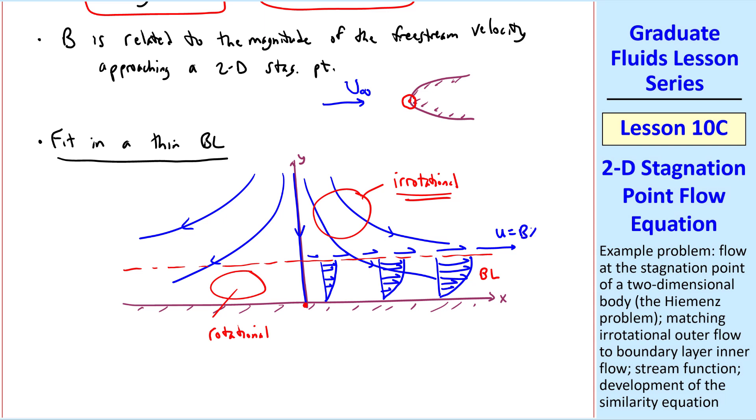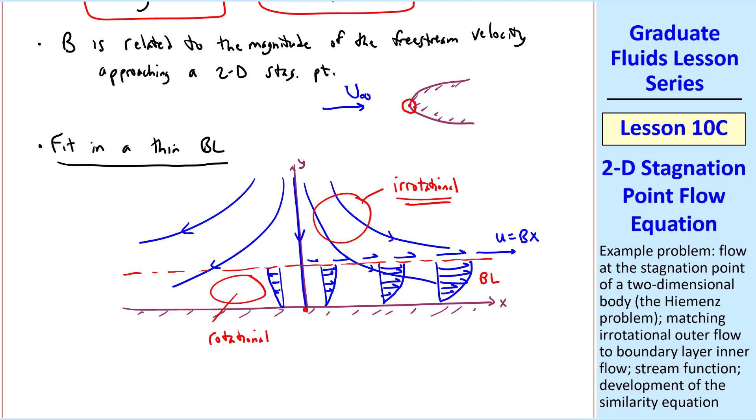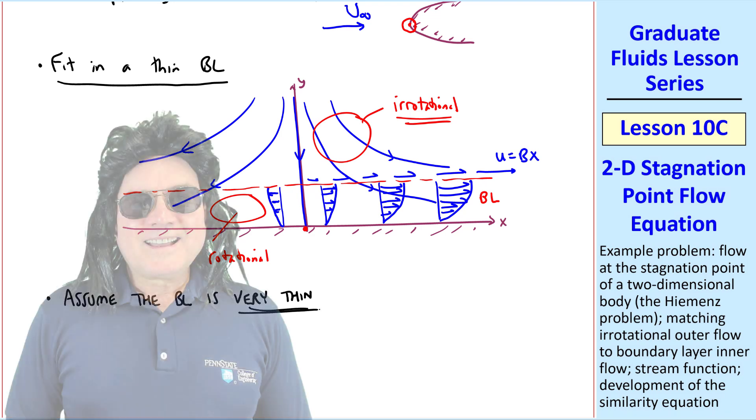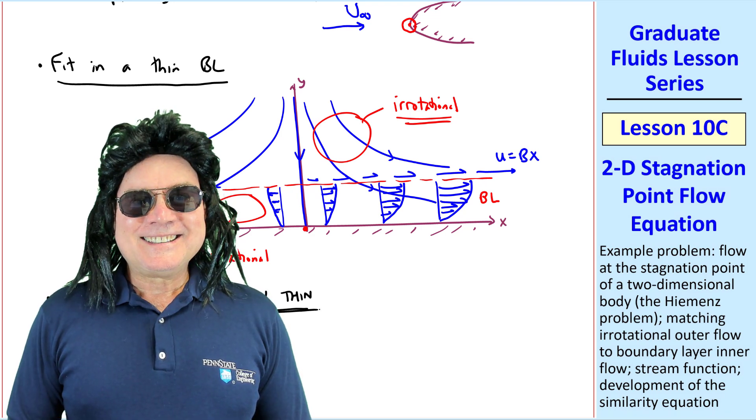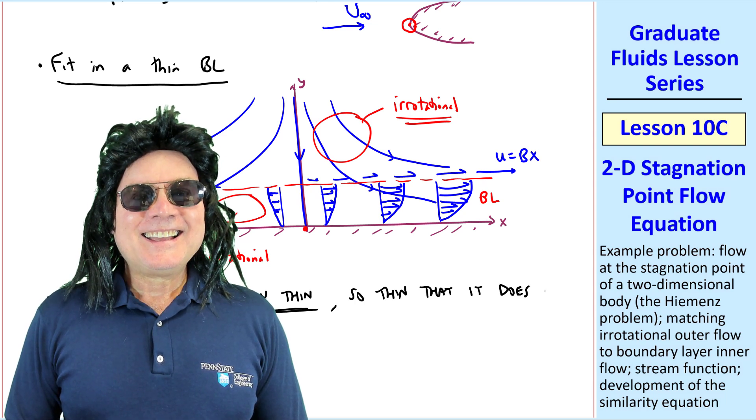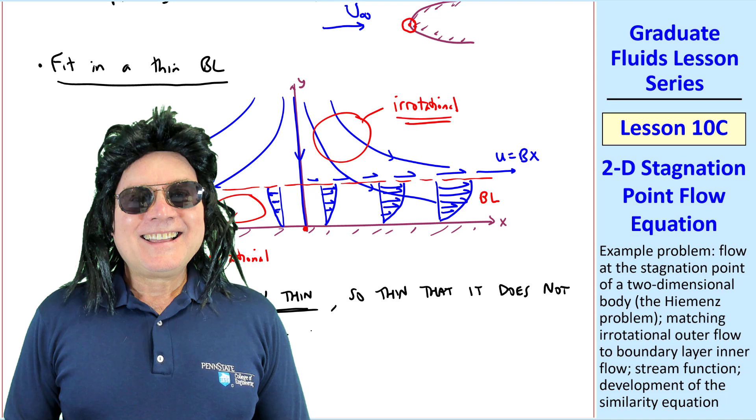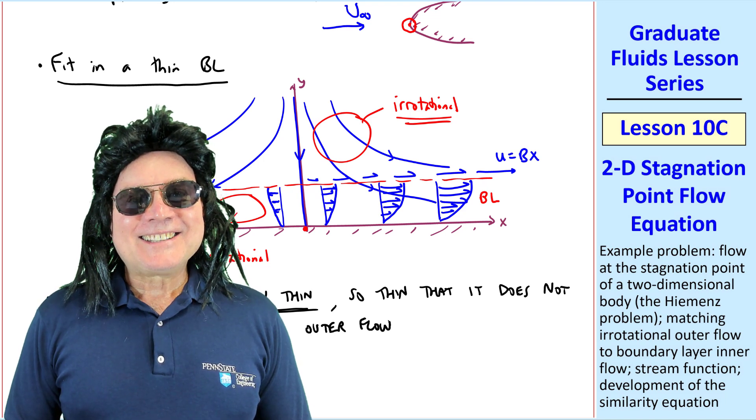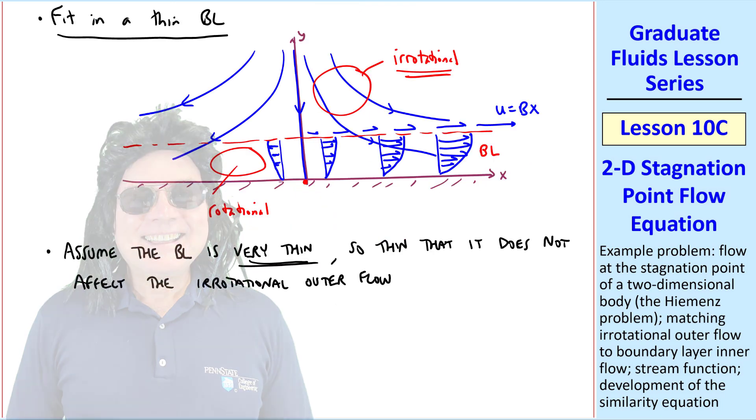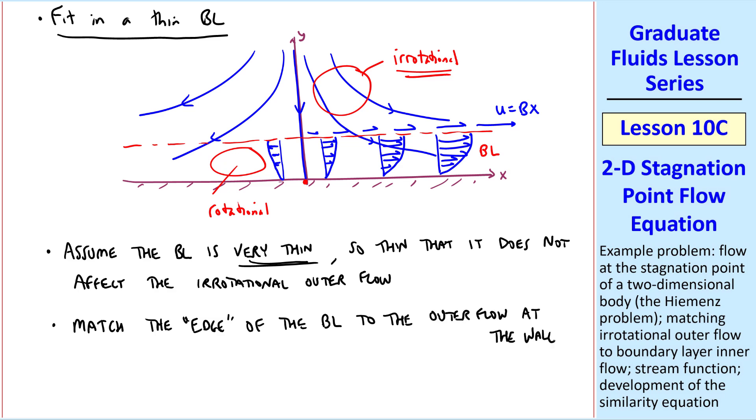Everything is symmetric about the y-axis as well. We'll make an assumption here, namely that the boundary layer is very thin. How thin is it, dude? Well Joe, it's so thin that it does not affect the irrotational outer flow. That's really thin, dude.